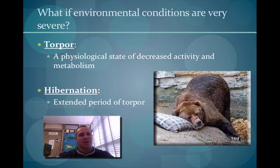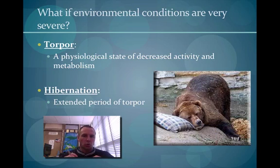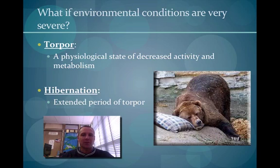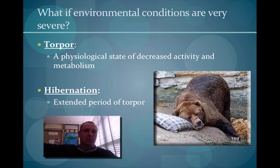Plants and animals in the desert do what's called estivation, in which they go through a short period of torpor. During the daytime when it's hot, they slow their metabolic rate down and become active at night when it's cooler.